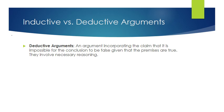With deductive arguments you're dealing with the logic of something where it's either possible or impossible. Either Chris was present or Chris was absent — he can't be both, so it's impossible for him to be both present and absent at the same time.